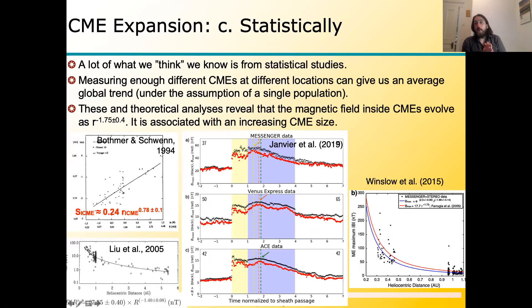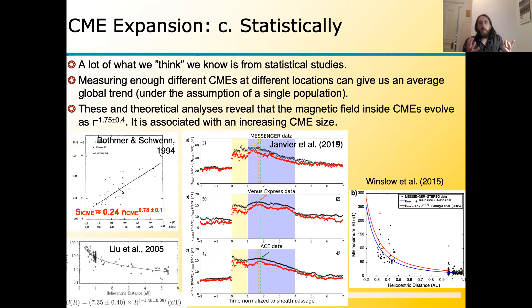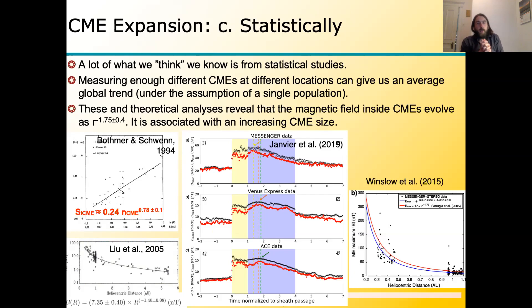The third way to study expansion is statistically, and really a lot of what we think we know about coronal mass ejections comes from statistics. You look at different CMEs, measure them at different distances, and put them all together assuming they represent a single or multiple populations behaving the same way. Early work using Helios and Voyager data was done in the nineties, expanded to more measurements in the 2000s, and also performed with Messenger and Venus Express, including work by Simon Good and colleagues.